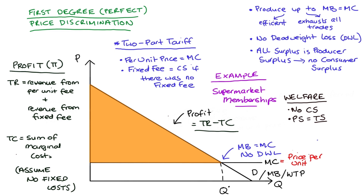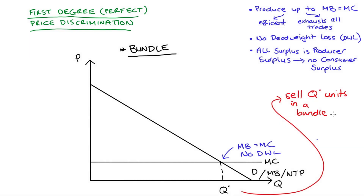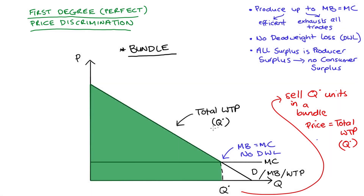The last strategy I'm going to describe as first degree price discrimination is selling a bundle of goods. I'll note that I've only taught this once before as part of a curriculum, so it's not a very common way to describe first degree price discrimination. But we get the same outcomes and it works. The idea is that the firm sells all Q* units as a bundle, and the price charged for that bundle is equal to the total willingness to pay for the good — the area shaded in green here, which sums up the willingness to pay for every unit up to Q*.